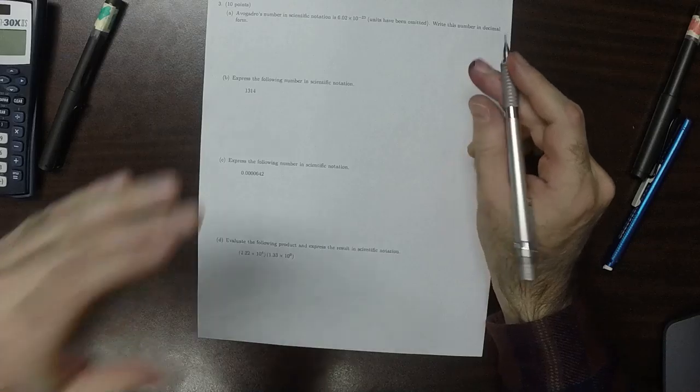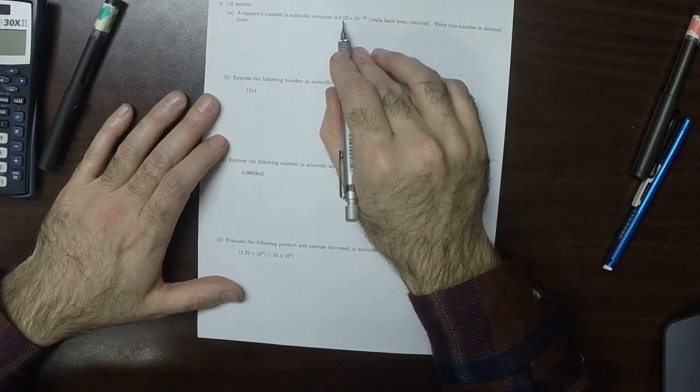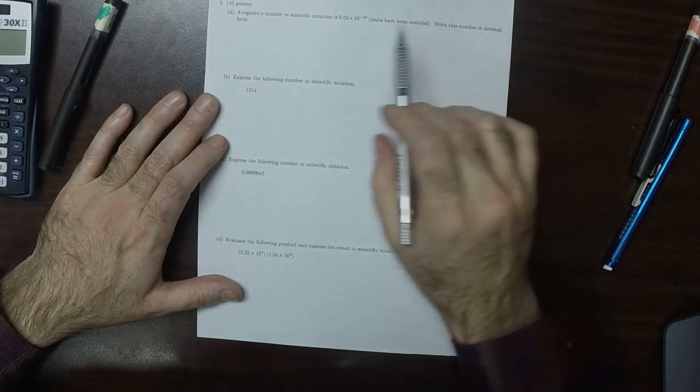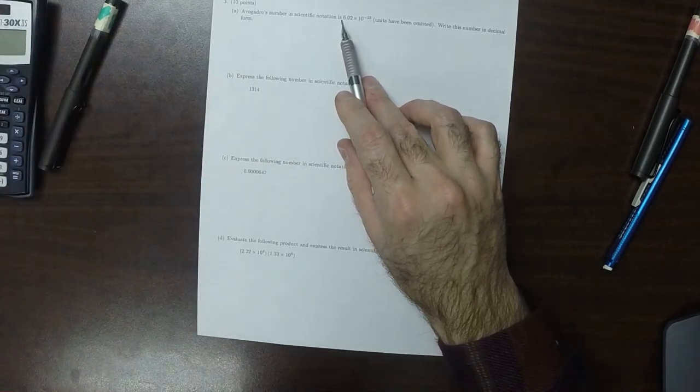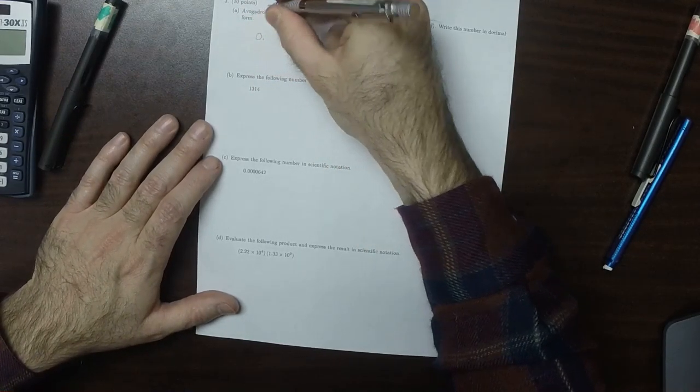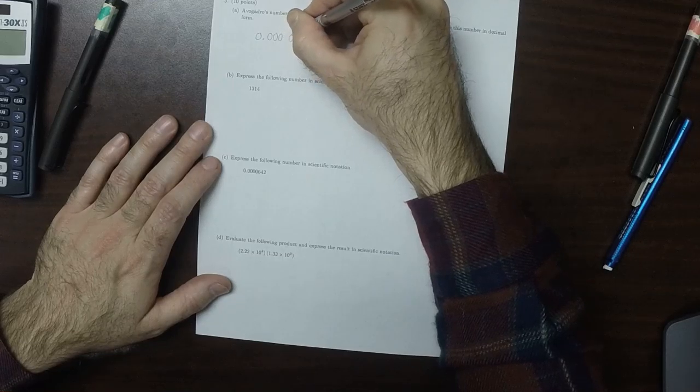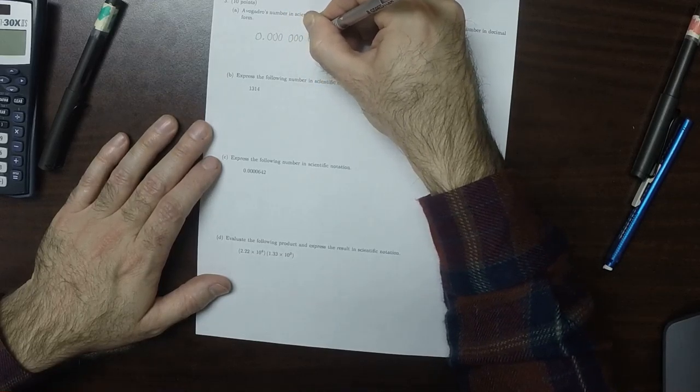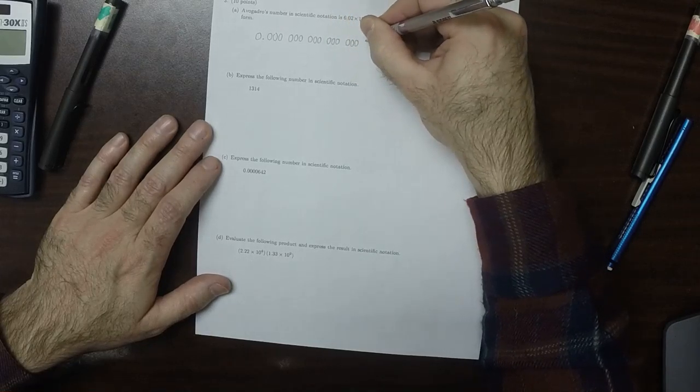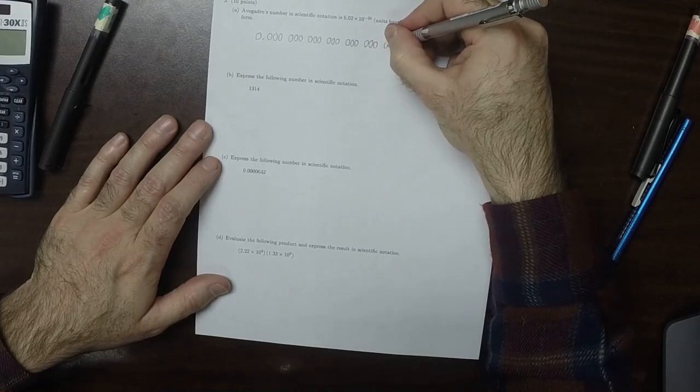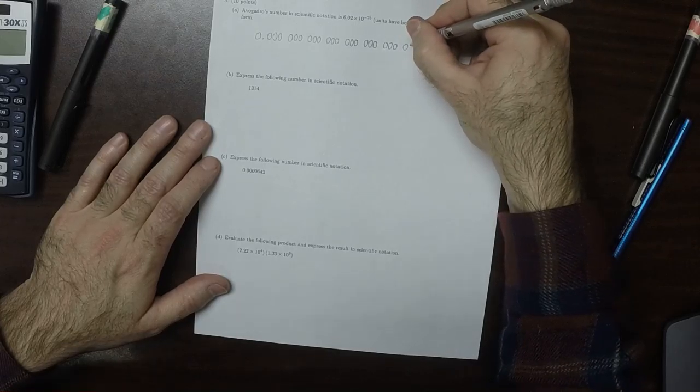Write this number in decimal form. So that means we need to move the decimal place 23 to the left from its current position. So that means that once we move it to here, we're going to start accumulating zeros. When we move it one position to the left, there's 22 more zeros to go. So we need to count out 22 zeros. I'll make them in groups of 3. 1, 2, 3, 1, 2, 3, 9, 12, 15, 18, 21, and then 22, and then 602.